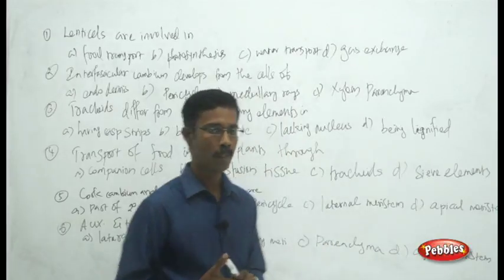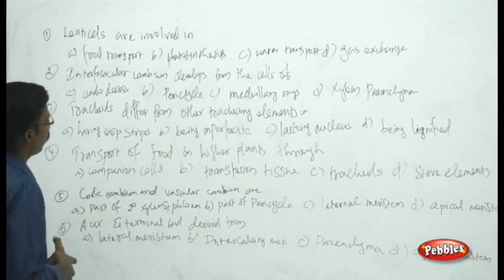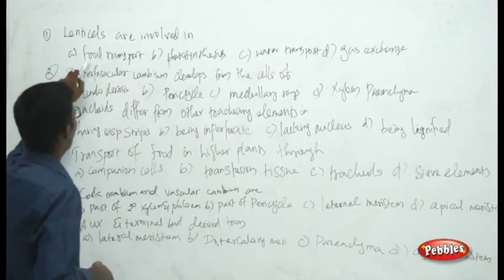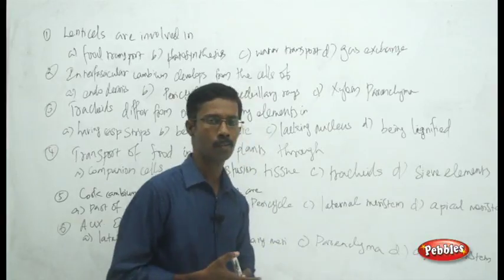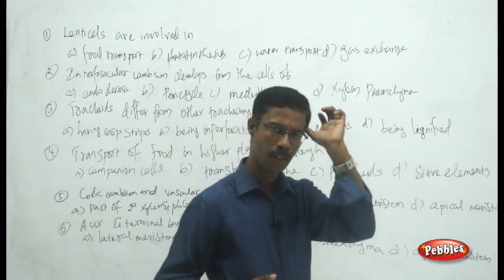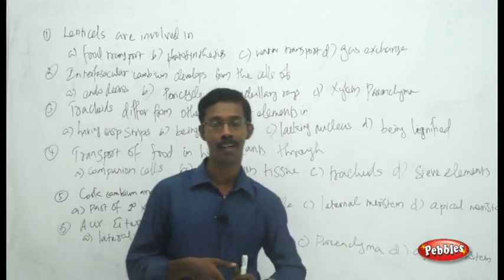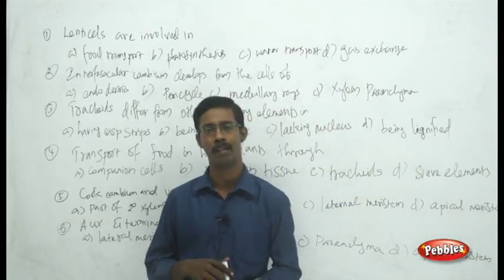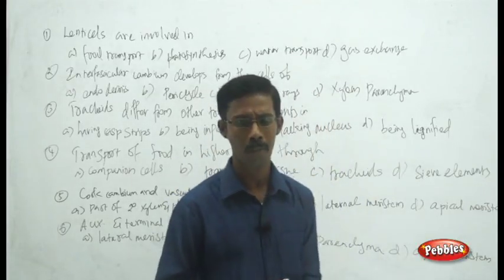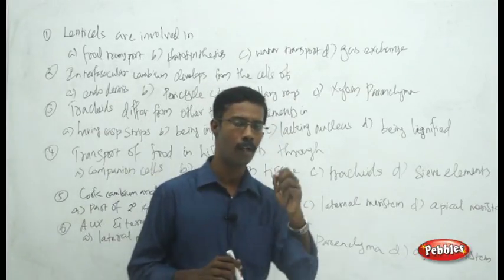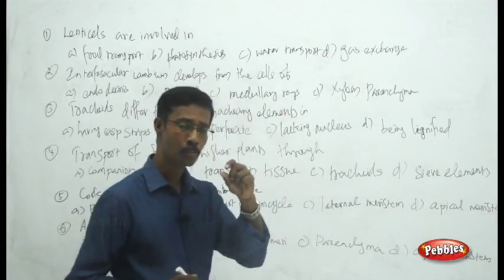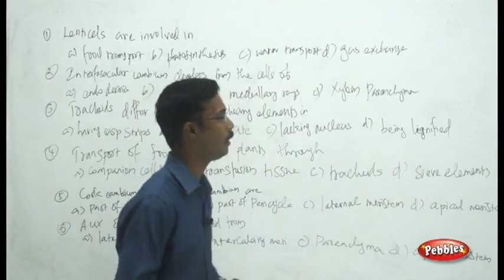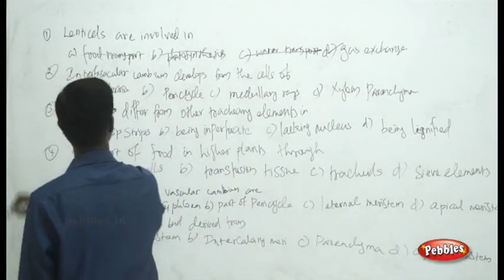The next set of questions from plant tissues: lenticels are involved in what? Choices are food transport, photosynthesis, water transport, and gas exchange. Lenticels are a modified form of secondary growth. After the girth increases, the external structure of the plant or tree breaks and forms bark. The bark then forms gaps or small opening-like structures called lenticels, which are involved in gas exchange. The answer is gas exchange.